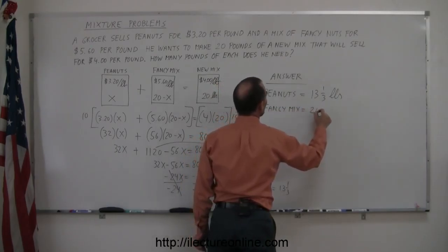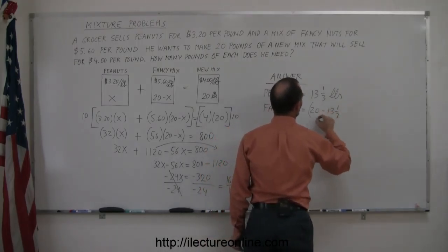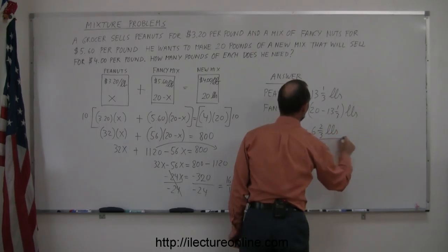We will need 20 minus that, and 20 minus 13 and a third is 6 and 2 thirds pounds of the fancy mix.